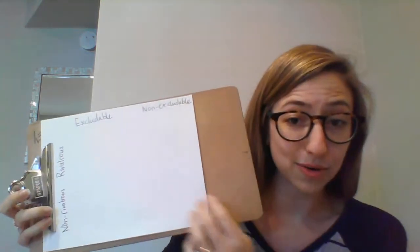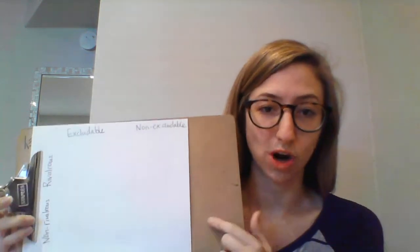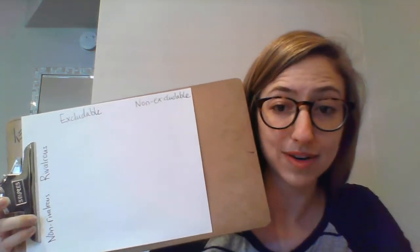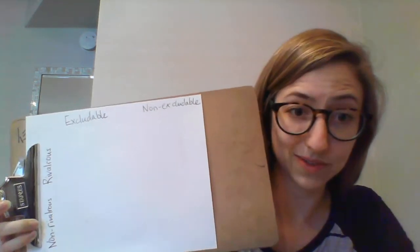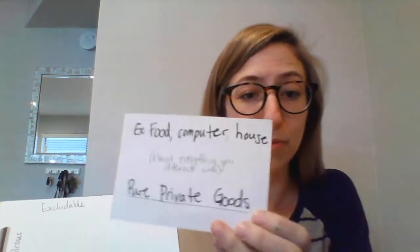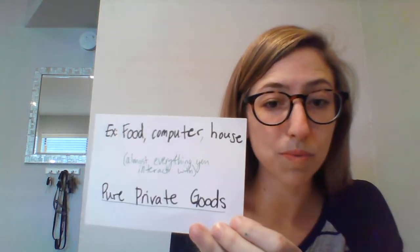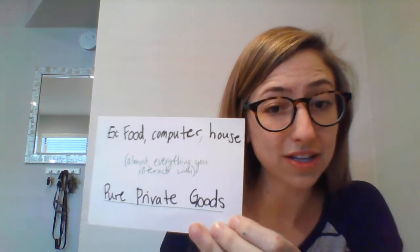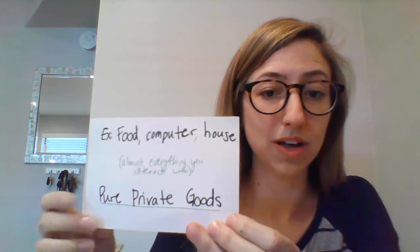Now that we're comfortable with what it means for goods to be rivalrous and non-rivalrous and excludable and non-excludable, we're going to put different categories of goods on this chart. First we're going to have the goods that are rivalrous and excludable. We call these pure private goods — excludable and rivalrous.